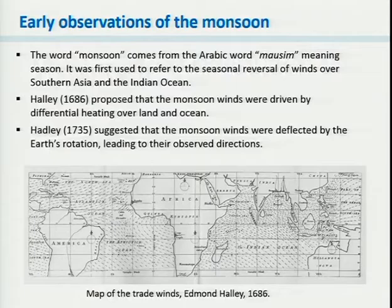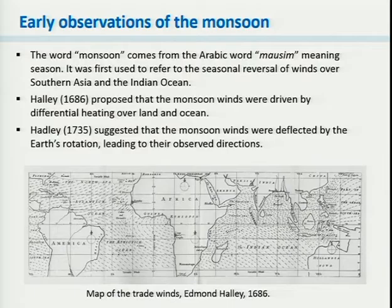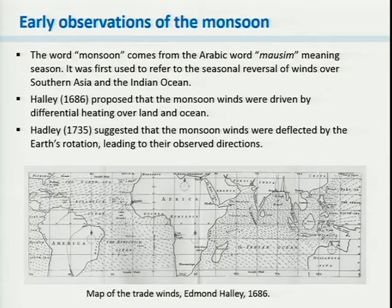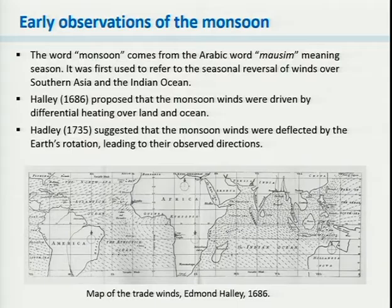The word monsoon is believed to come from the Arabic 'mausim', meaning season. Those that live in the regions of the world which experience the monsoon have understood it for hundreds of years, and it was first defined in relation to the South Asian or Indian Ocean region. Interestingly, Edmund Halley — famous for his discovery of the comet — back in 1686 proposed that the monsoon winds were driven by the differential heating over land and ocean. He came up with a simple model that heating over land would drive a pressure gradient creating an onshore flow — the first physical model for the observed phenomenon of monsoons.